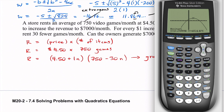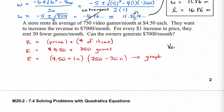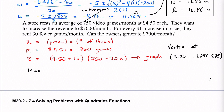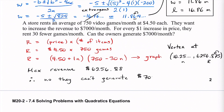So the vertex gives us the maximum revenue. The maximum revenue is approximately $6,526.88 — rounding the five rounds up the seven to get 88 cents. Since the maximum possible revenue is only about $6,526.88, the owners definitely cannot generate $7,000 per month, as that's more than the maximum. Also note: the dollar sign goes at the start, not the end.